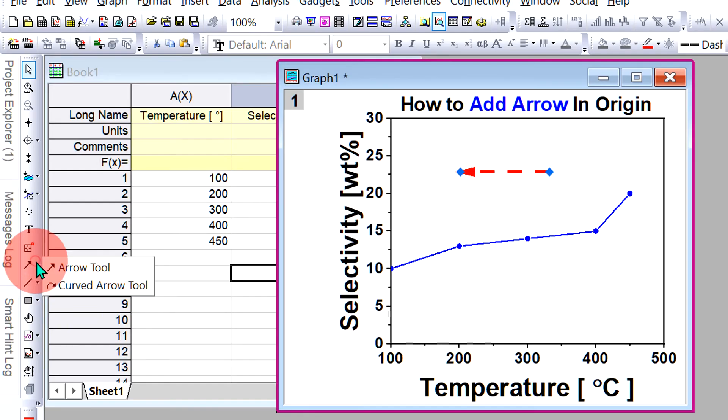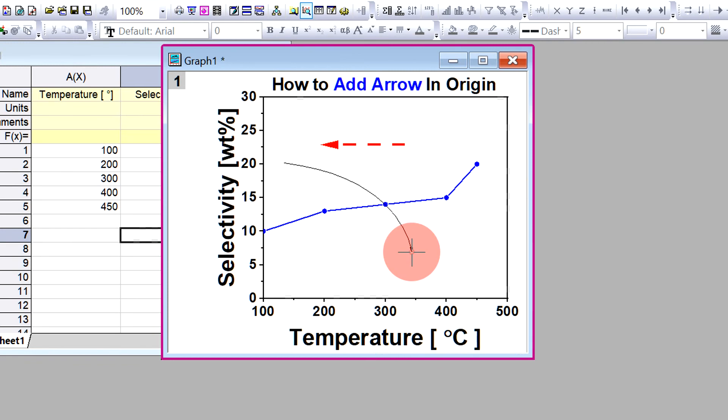Now to draw the curve arrow select this time curve arrow tool then draw the arrow and now you can curve it according to your need. You can then customize this arrow as shown before.